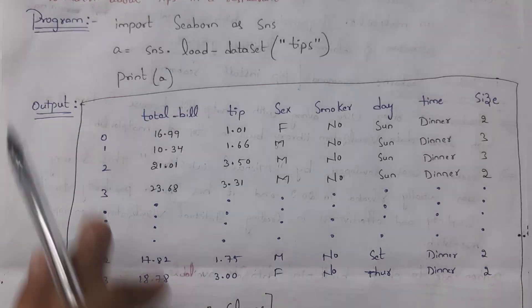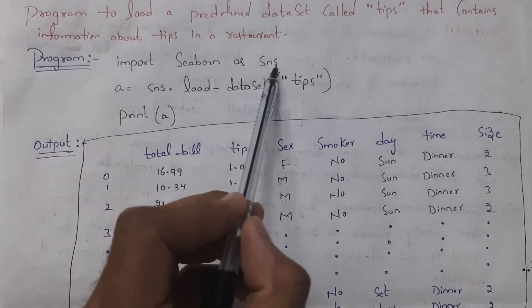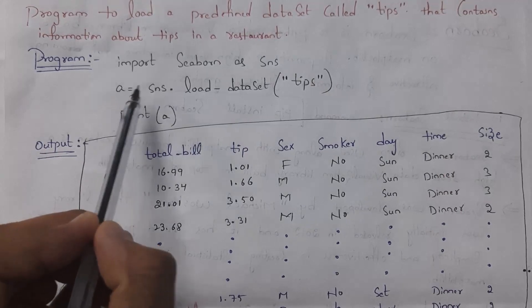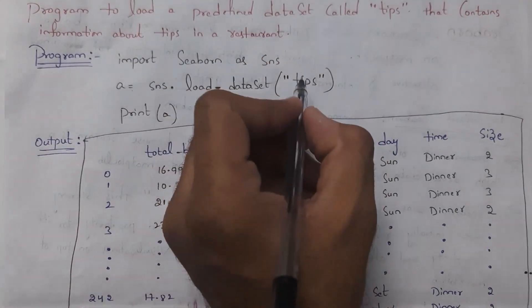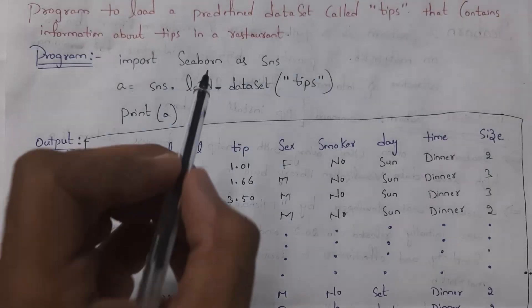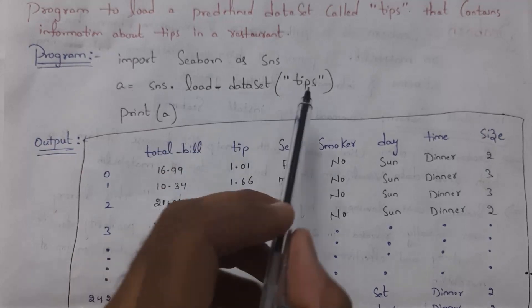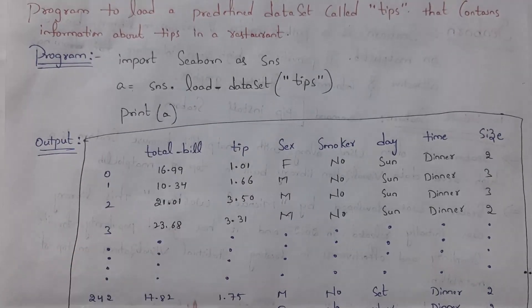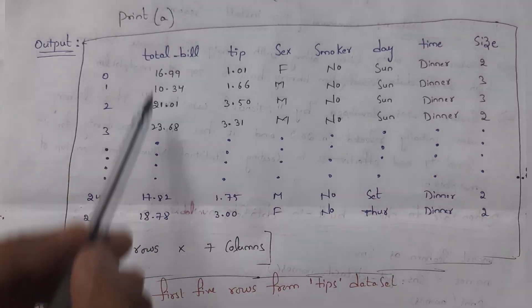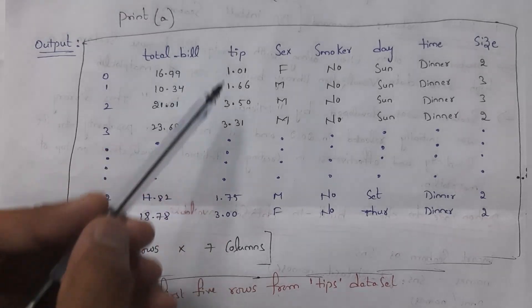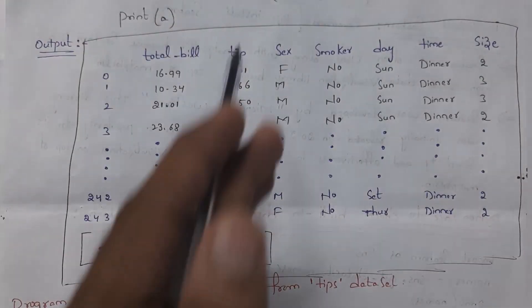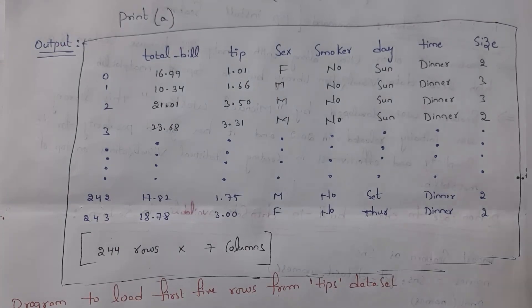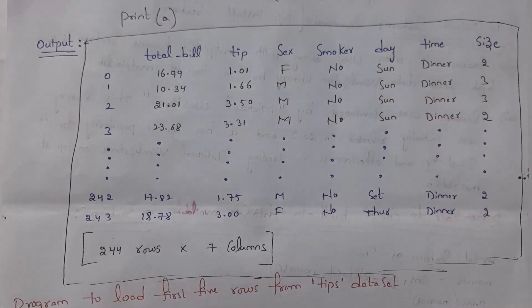First, write import seaborn as sns, where sns is the short name for the Seaborn library. Next, take variable A equal to sns.load_dataset('tips'). In Seaborn, by using the load_dataset() function, we can load any dataset. My dataset is stored in variable A. When you write print(A), this is the output — it displays the complete information in the TIPS dataset. There are 7 columns: total bill, tip, sex, smoker, day, time, and size. Total there are 244 rows in the data.